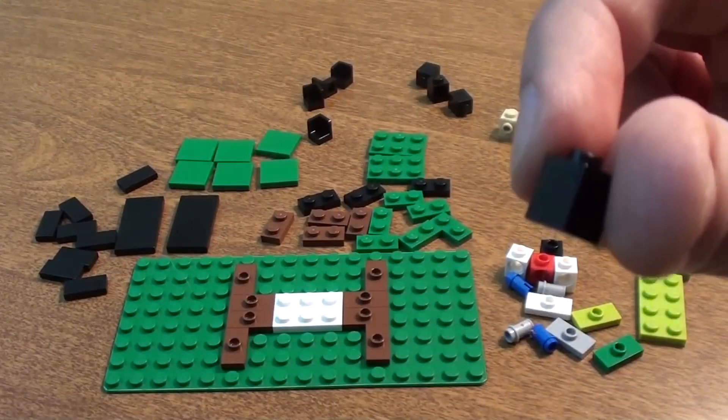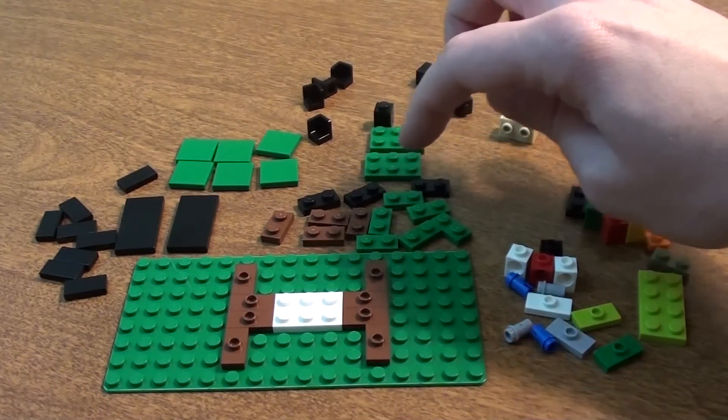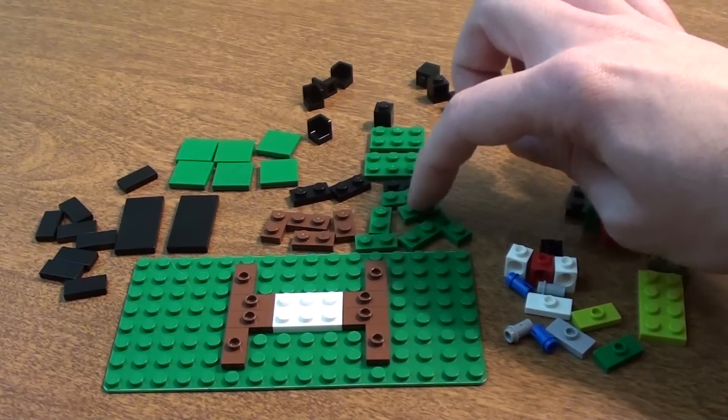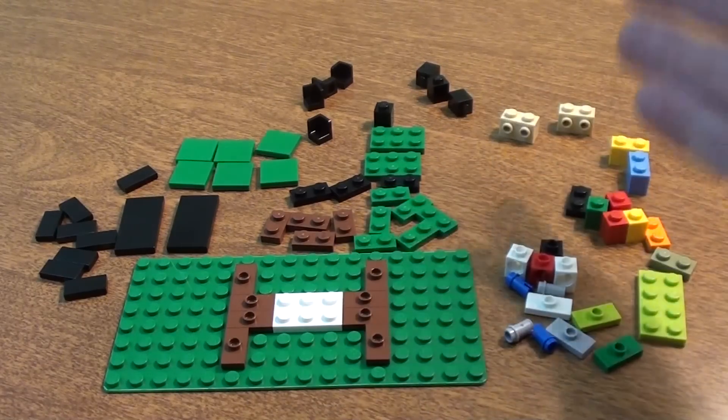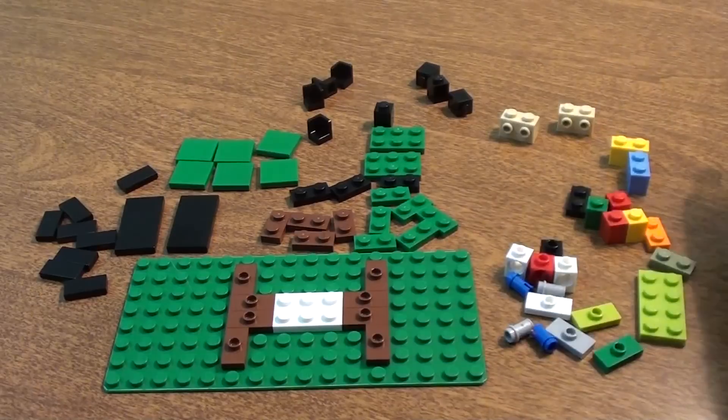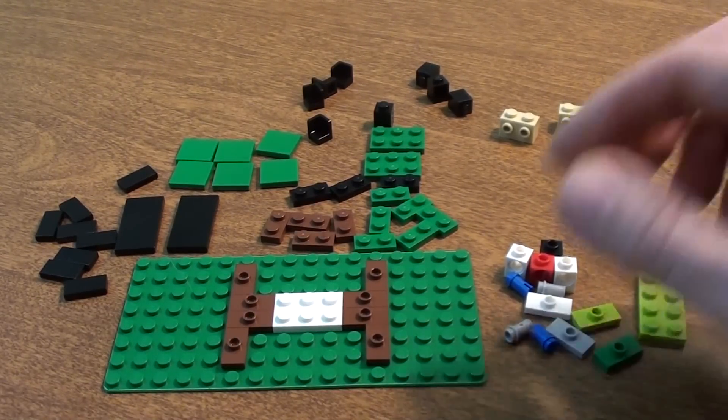We also have two green 2x3 plates, these black 1x2 plates, and these green 1x2 plates. Everything that's black and green has to stay that color. Everything on this side that's a different color can be any color you have around the house.